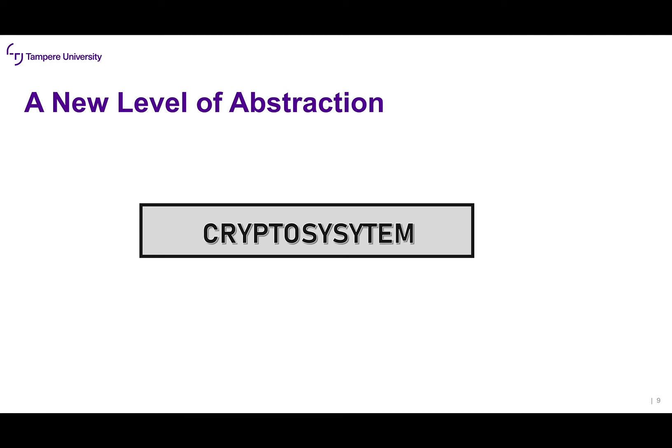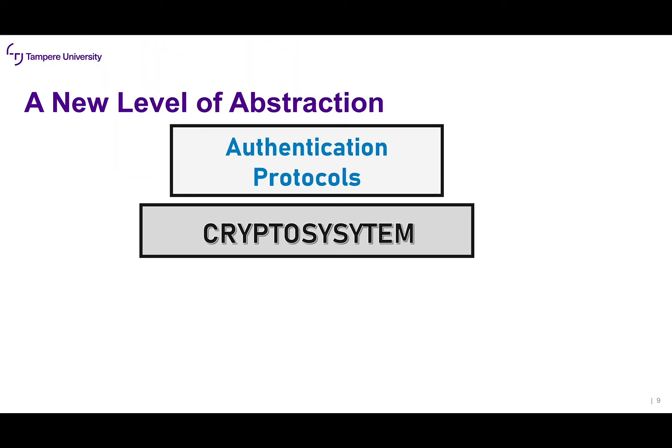So there's a new level of abstraction. Till now in the previous lectures, we talked about crypto systems — how encryption and decryption work, symmetric and asymmetric keys, public and private keys, signatures — algorithms that take a secret as input and output an encrypted version. Now, on top of the crypto system, we can use it to build what we call authentication protocols.